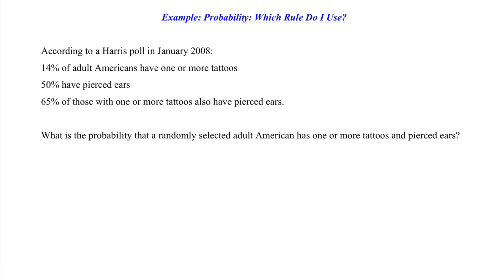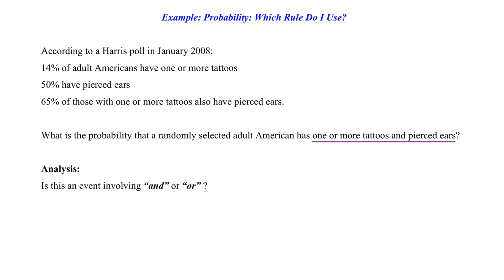Jumping into our next example: according to a Harris Poll in January 2008, 14% of adult Americans have one or more tattoos, 50% have pierced ears, and 65% of those with one or more tattoos also have pierced ears. We're asked: what is the probability that a randomly selected adult American has one or more tattoos and pierced ears? The first part of our analysis is to ask: is this an event involving AND or OR? We're discussing compound events, and we know we've got an AND situation.